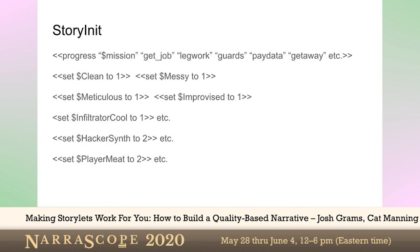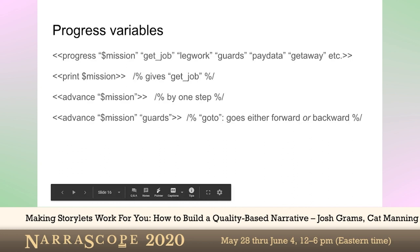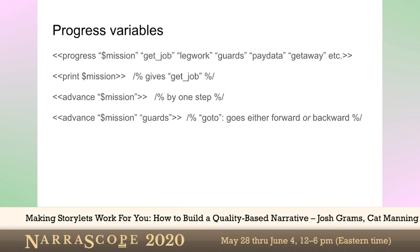More on progress variables. This is how you define this — you're going to want to put that in your StoryInit thing, so it's there from the beginning. This also stores the progress in a thing that doesn't build up in your Sugarcube history and slow your game down. So it needs to be done at the very beginning. If you print out the mission variable, it's stored as a string, so that'll give 'get_job' when you first start off. We have this 'advance' macro — you have to pass the name of the variable as a string because it needs to modify it; that's just how Sugarcube works. That will advance it by one step. You can also tell it to go to a particular state, which goes either forward or backward — it just finds that state in your list and goes straight there. Generally you don't want to put spaces in your progress names because one of the limitations of TinyQBN is that we can't put spaces in our requirements or conditions on the storylets.